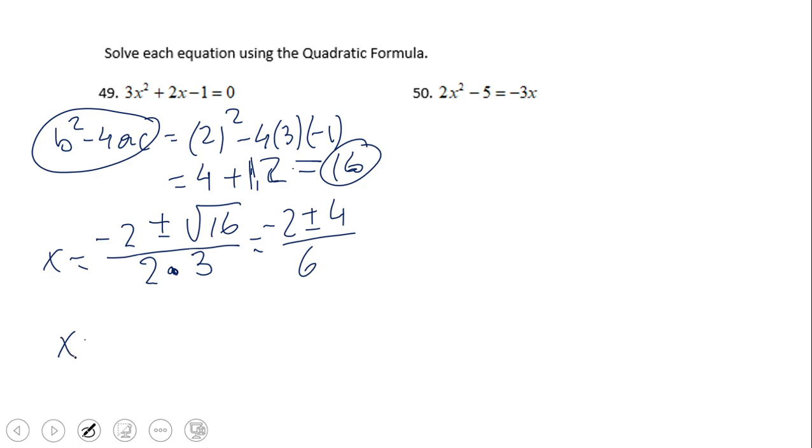So that will give us what solutions? The first one, negative 2 plus 4, that will be positive 2 over 6, that will be one-third. And the second one, we have negative 2 minus 4, that is negative 6 over 6, that will be negative 1.